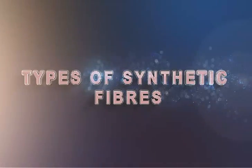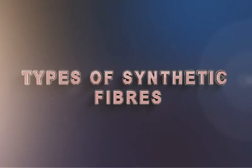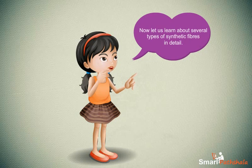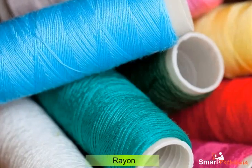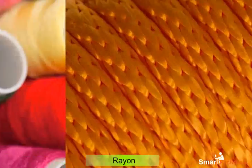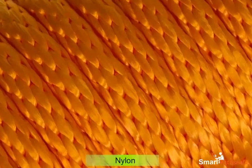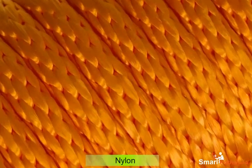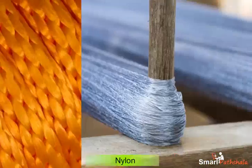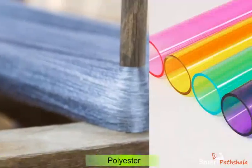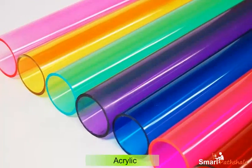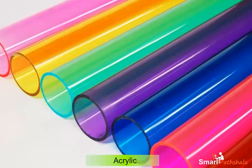Types of Synthetic Fibers. Now let us learn about several types of synthetic fibers in detail. Rayon, Nylon, Polyester, and Acrylic are some of the synthetic fibers.